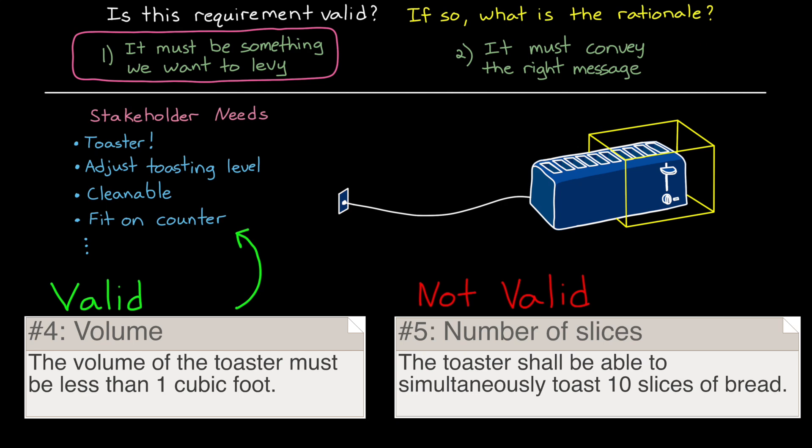Now, even if we have a valid rationale for a requirement and it's technically and programmatically feasible and everything is consistent, a requirement still might not be valid if it's poorly written. To understand what that means, let's go through some examples. A requirement must be clear, concise, and unambiguous. That is, it conveys a single thought, can only have a single interpretation, and doesn't contain unnecessary information.